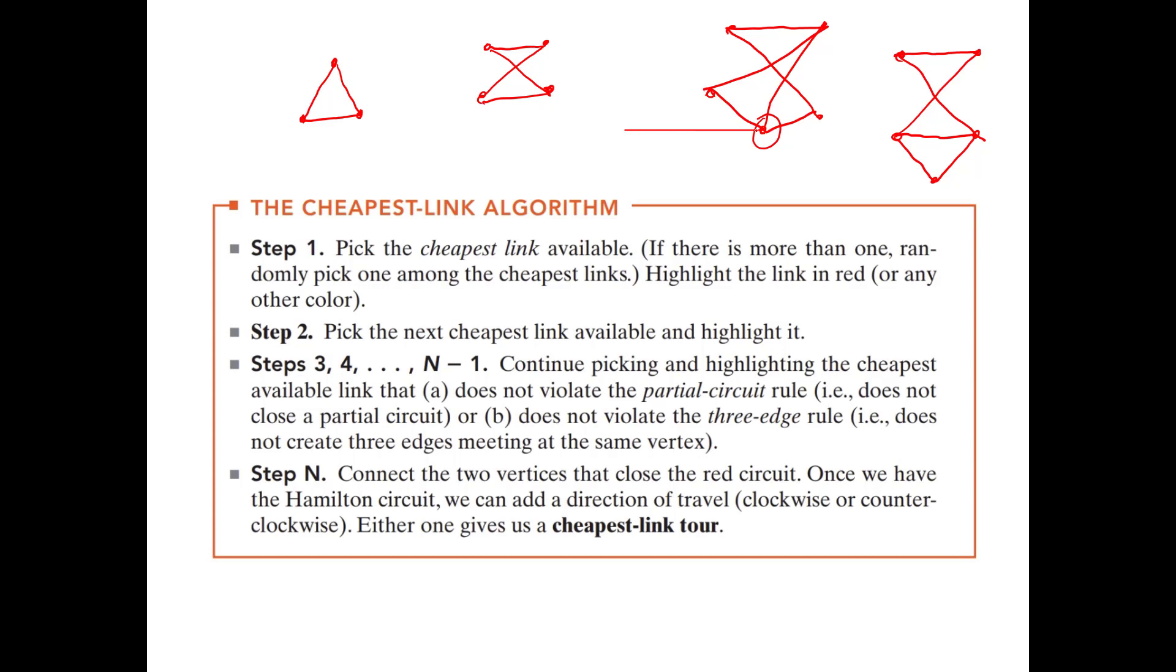And then finally, step n, if you have n vertices, the last edge, you're going to find by just connecting the two vertices that close the red circuit. Once we have the Hamilton circuit, we can add a direction of travel clockwise or counterclockwise. Either one gives us the cheapest link tour.